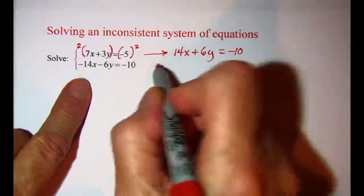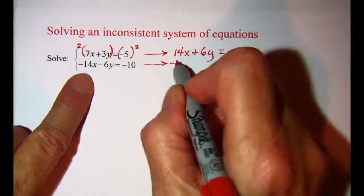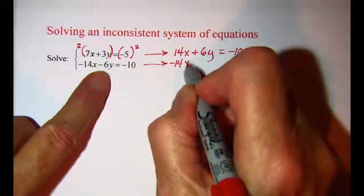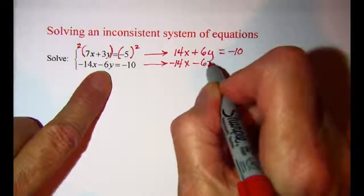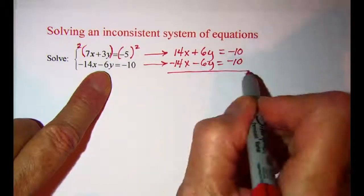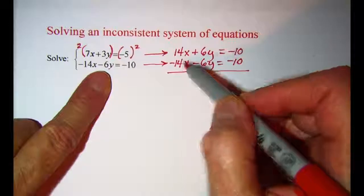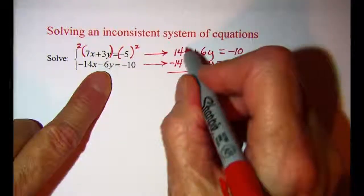Now I don't have to do anything to this equation except copy it. I have negative 14x minus 6y equals negative 10. And when I add these two equations together, 14x and negative 14x gives me 0.